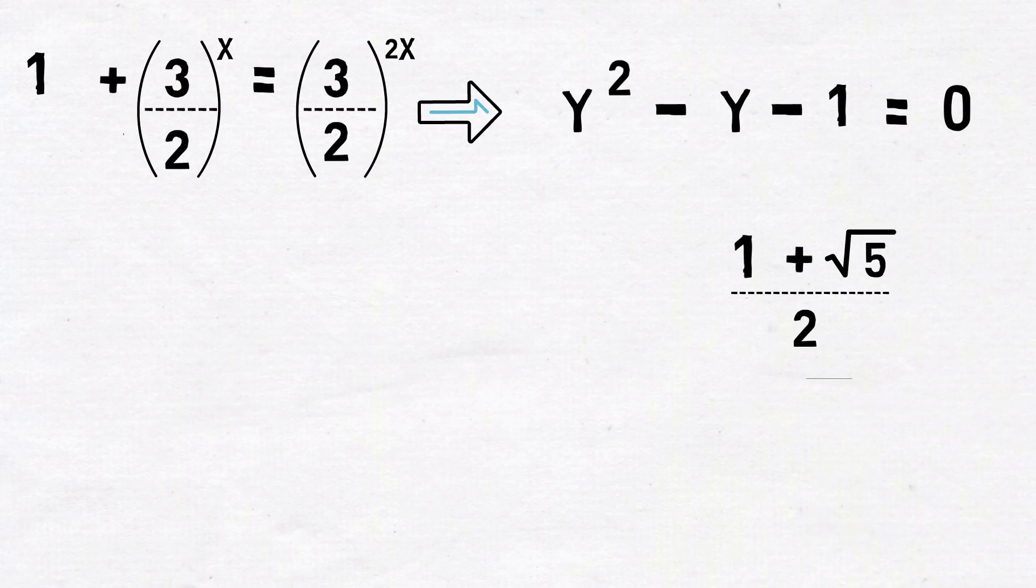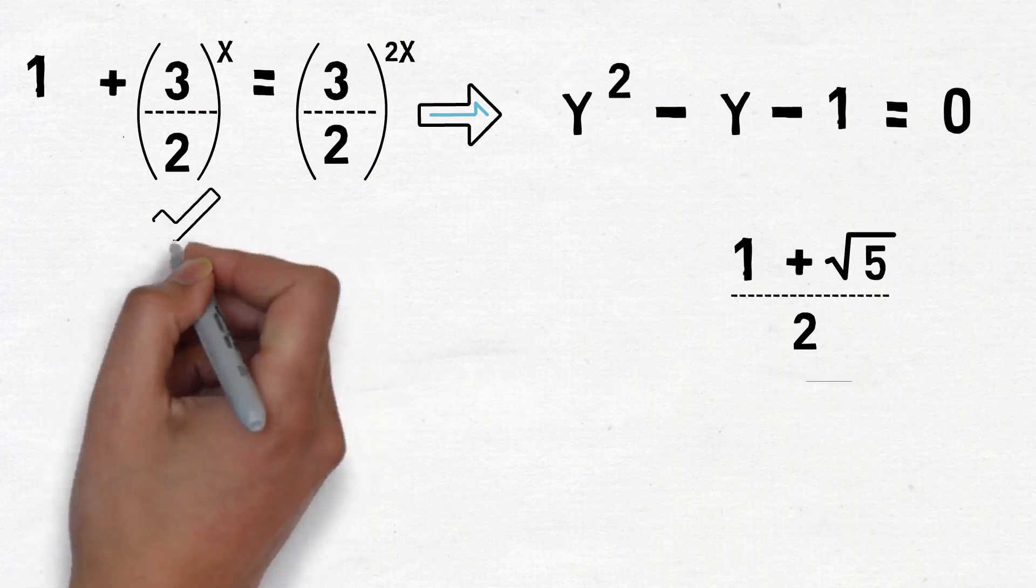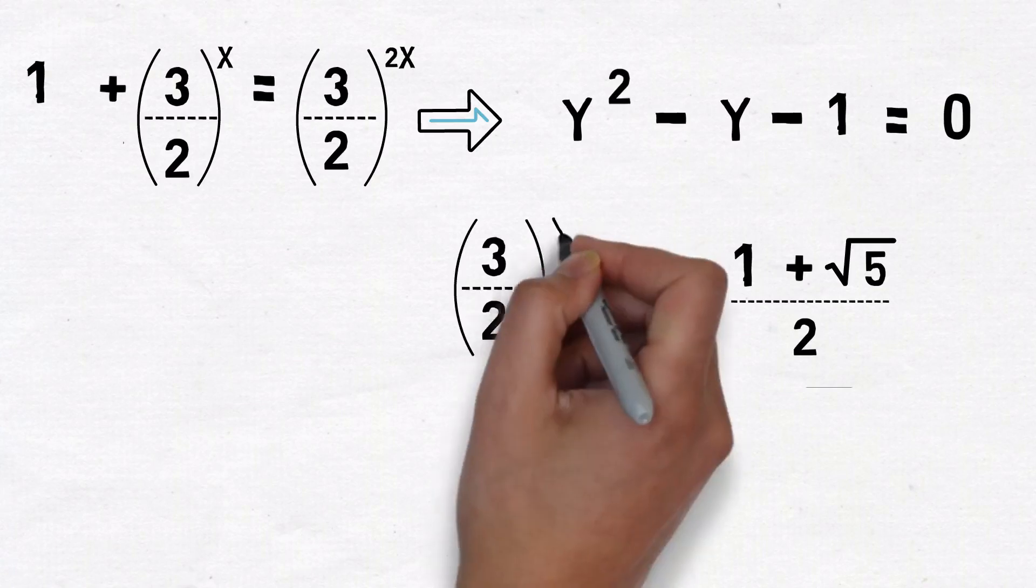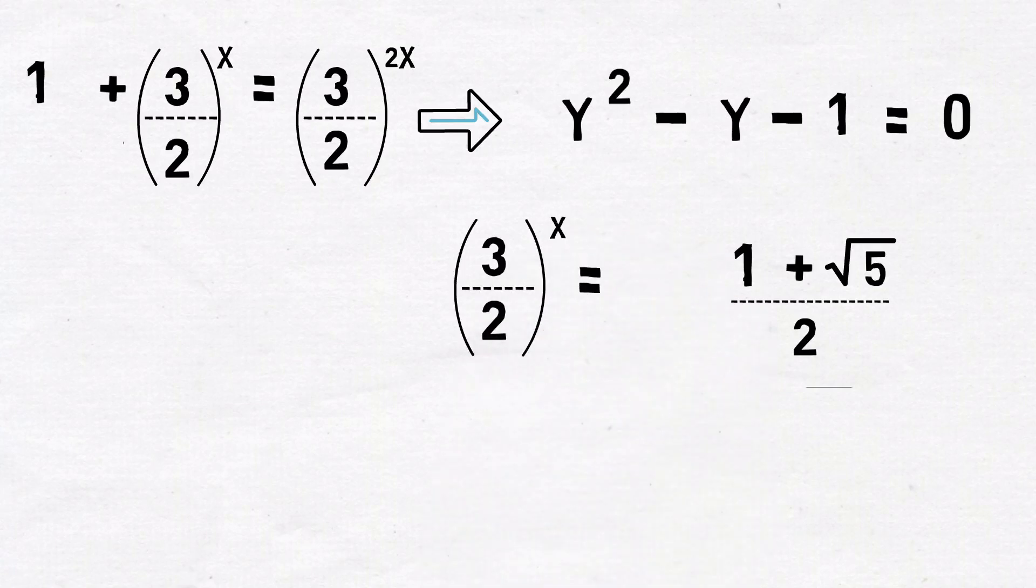But wait, we are not done as yet. We have to calculate x and not y, remember? So we have 3 by 2 to the power x is equal to 1 plus square root of 5 divided by 2.